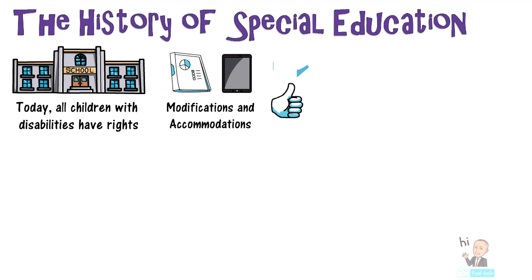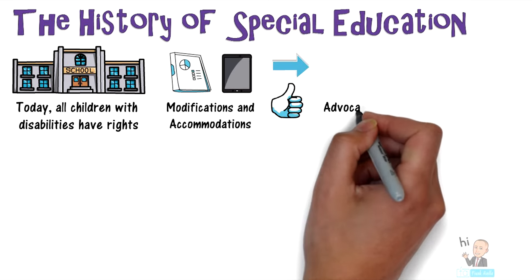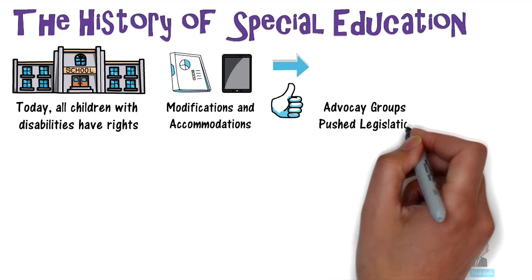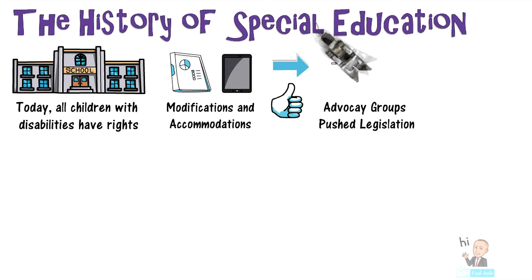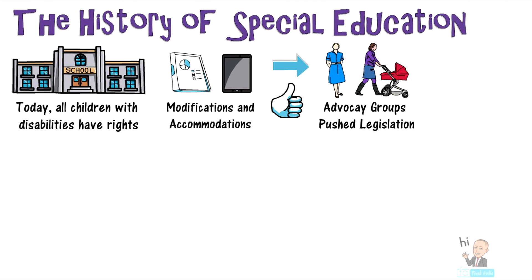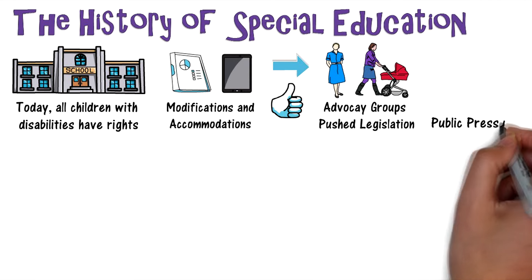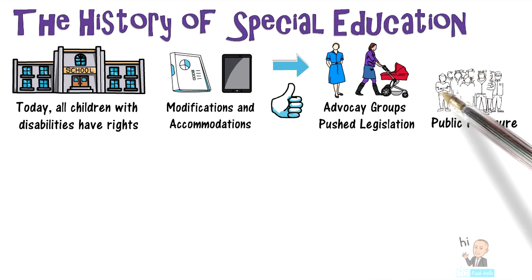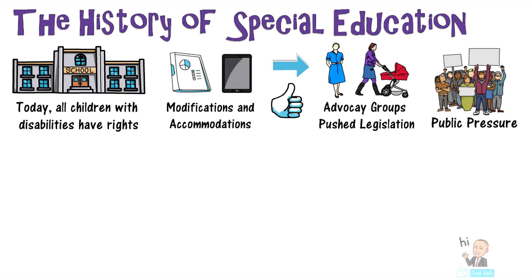However, this wasn't always the case. It was only with the help of certain advocacy groups, which were usually formed by parents of students with special needs and other members of that community. These advocacy groups lobbied and fought for these children by bringing their plight to the public eye, as well as putting pressure on local and state politicians.